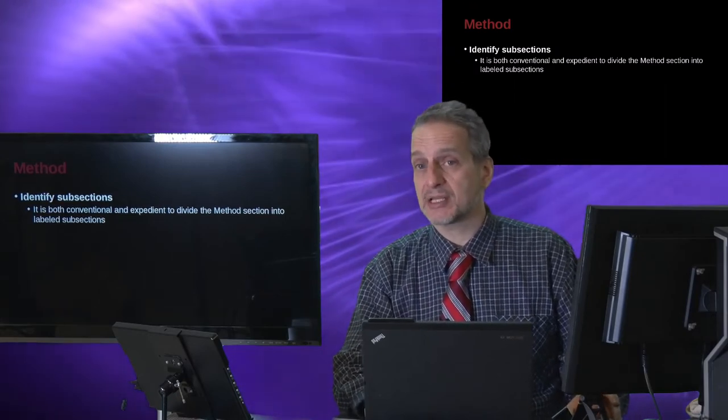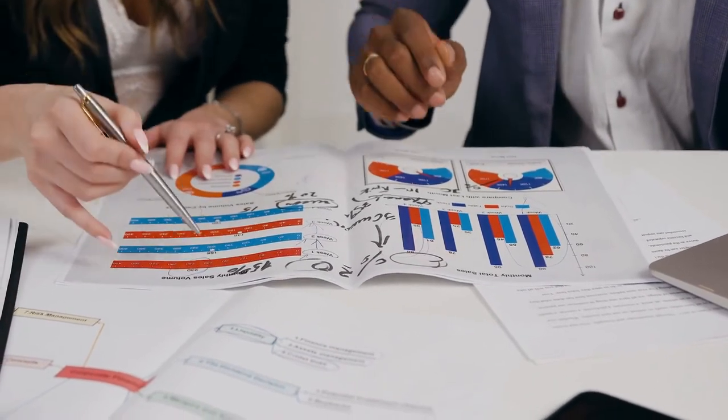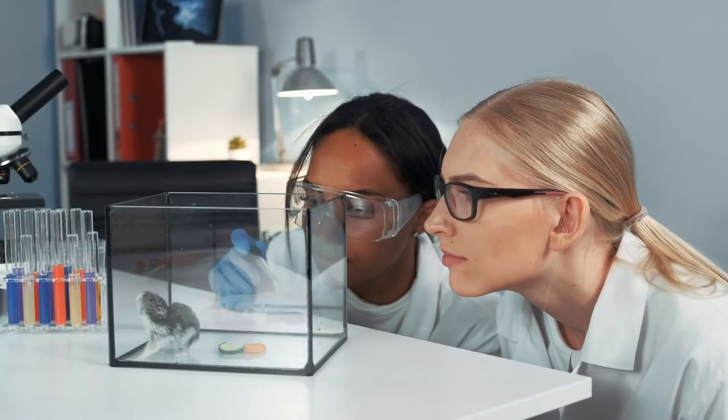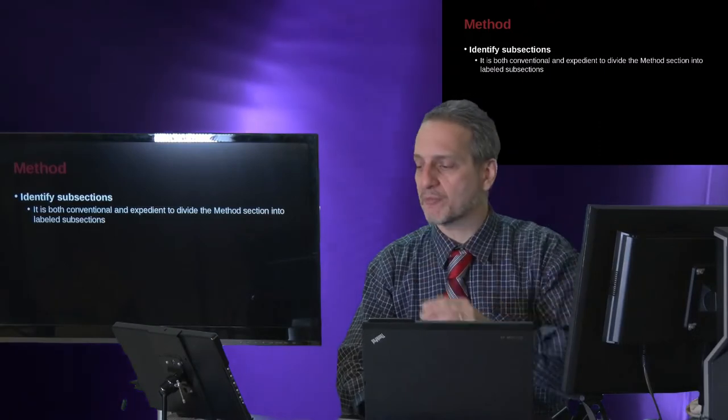You may have a subsection like survey, a subsection like sample, a subsection like human respondent or human subjects. You may have animal subjects. So you break it into different parts.